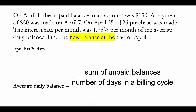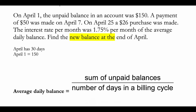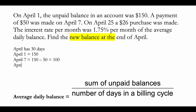Let's keep a tab on the daily purchases. On April 1st, you had an account balance of $150, with no activity until April 7th. On April 7th, a payment of $50 was made, meaning your balance went from $150 to $100 by the night of April 7th. Then there was no activity until April 25th, when a $26 purchase was made. At the end of that night, your balance became $100 + $26 = $126, with no more activity through the end of April.